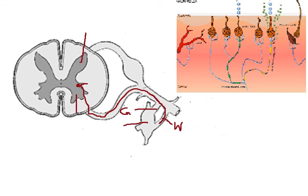The preganglionic sympathetic fibers leave the trunk of the spinal nerve by using the white rami communicants. This looks white because these fibers are myelinated. The preganglionic fiber then reaches the sympathetic ganglion, where it synapses with the postganglionic neuron.